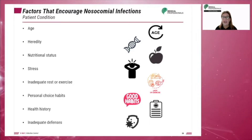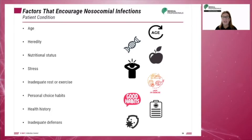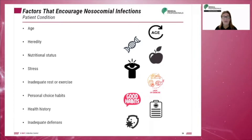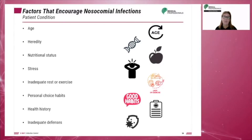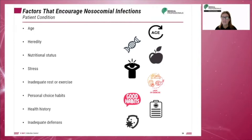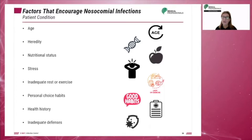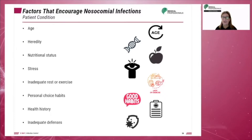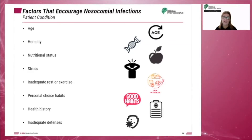Personal choice habits: some patients' choices can lead to compromised immune systems, for example smoking. Health history: multiple surgeries or even a recent surgery can compromise the immune system. Inadequate defenses: a patient who is immunocompromised will not have an adequate defense against a disease and will be more likely to get infected when compared to a healthy individual.